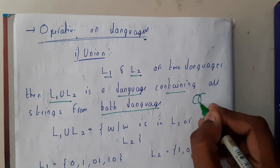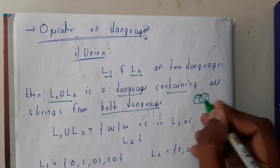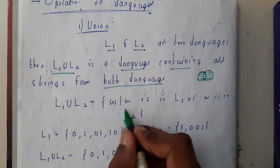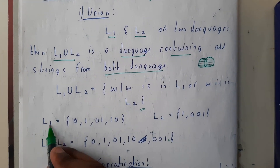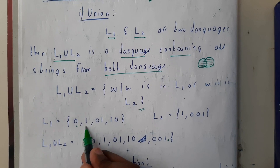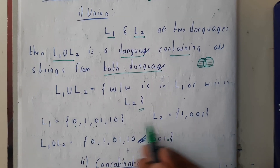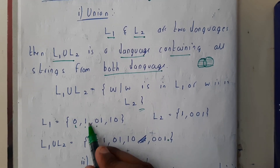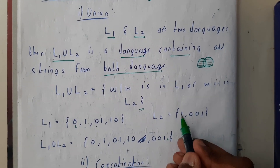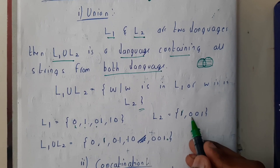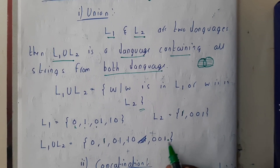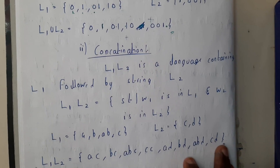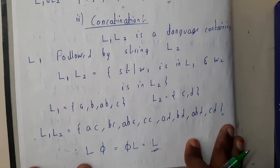L1 union L2 is a language containing all the strings of both languages. Union is everything combined. So if L1 equals {0, 1, 01, 10} and L2 equals {1, 001}, then L1 union L2 is {0, 1, 01, 10, 001} — since 1 is already present we avoid duplicating it, and just add 001. This is our union of the given languages.